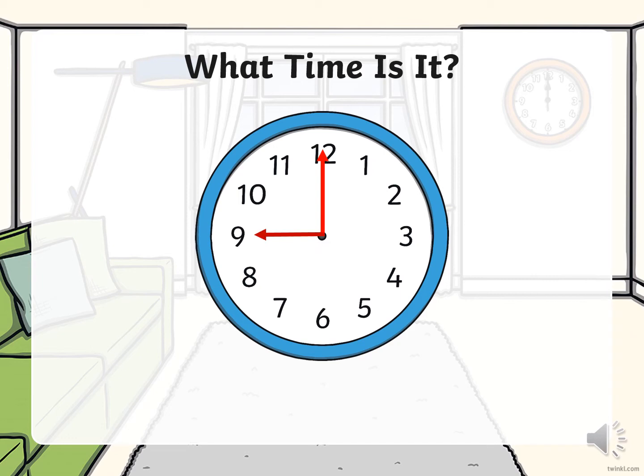And now, let's have a look. The long arm is pointing to 12 and the short hand is pointing to 9. This means it is 9 o'clock.